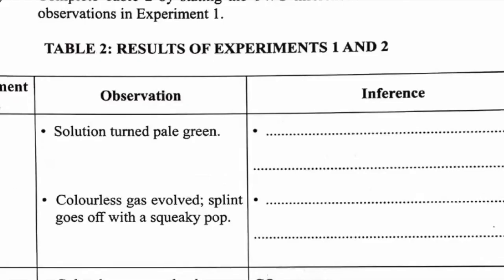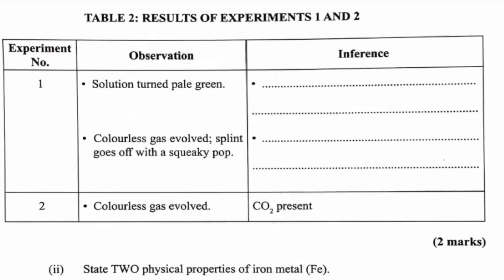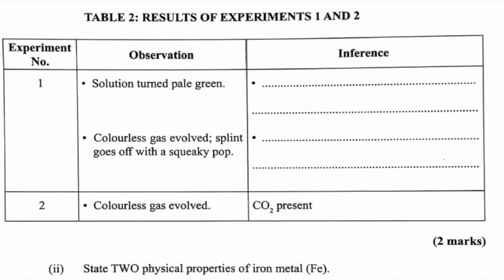Iron metal and sodium bicarbonate were both treated with excess sulfuric acid. For experiment one with iron: the solution turned pale green, from which we can infer that Fe²⁺ ions are present. A colorless gas evolved and the splint went off with a squeaky pop, so we can infer that hydrogen gas is present — hydrogen is explosive and puts out a lighted splint with a popping sound.